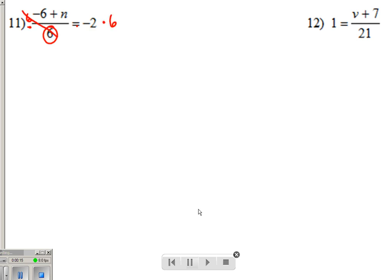So it cancels out on the left side of the equation, but negative 2 times 6 over on the other side is negative 12. That's how we free up that negative 6 plus n, and then we just add 6 to both sides, and we're done.